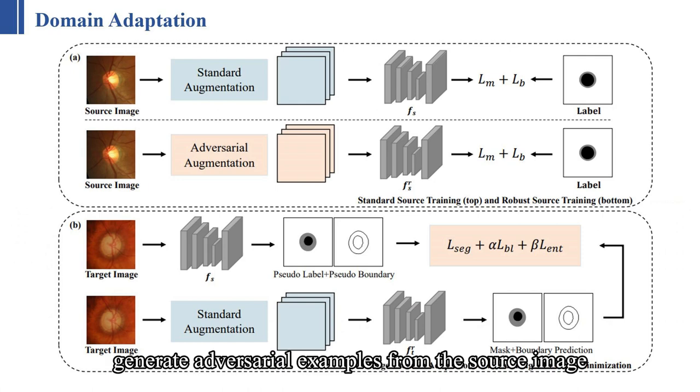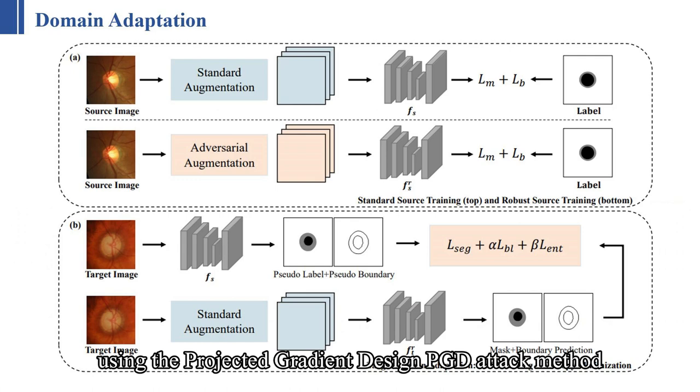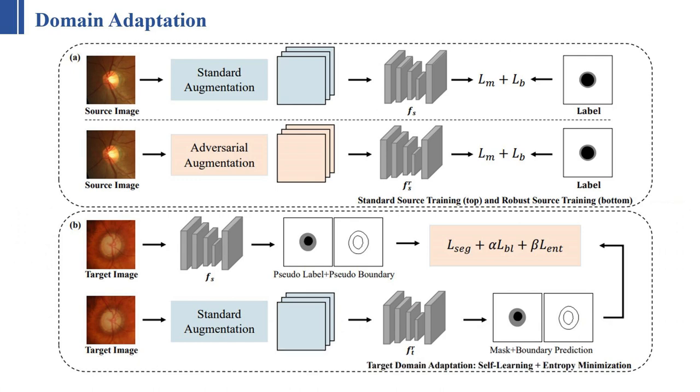Moving to the robust source training, we first generate adversarial examples from the source image using the projected gradient descent (PGD) attack method. These adversarial samples are then utilized as an advanced form of data augmentation for our training dataset. The robust source model is trained with the same loss function as the standard model.